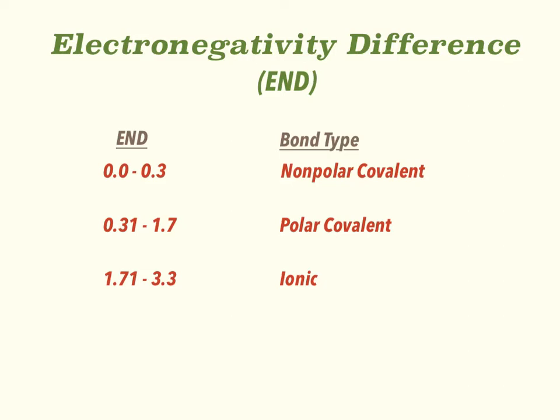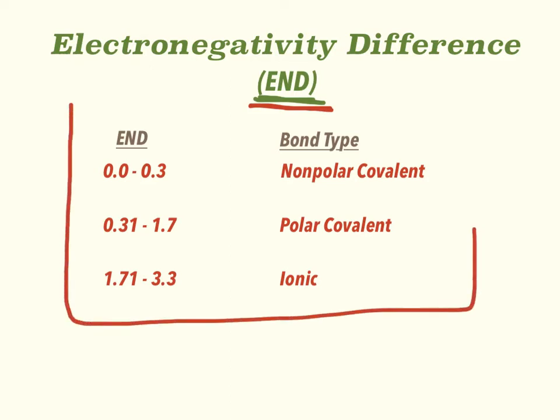So how do you tell the types of bond that you have in a compound? Well, that's found by the electronegativity difference. Electronegativity difference is abbreviated END, and that's what I will have it from now on. You're going to want to write this little chart down in your notes so that you have it. If the END electronegativity difference is between 0 and 0.3, then we consider that a nonpolar covalent bond. If it's between 0.31 and 1.7, that's a polar covalent. If it's between 1.71 and 3.3, that's an ionic. These are just general terms. Sometimes when you get close to the edges at 0.3 and 0.31, it's tough to tell between nonpolar and polar.